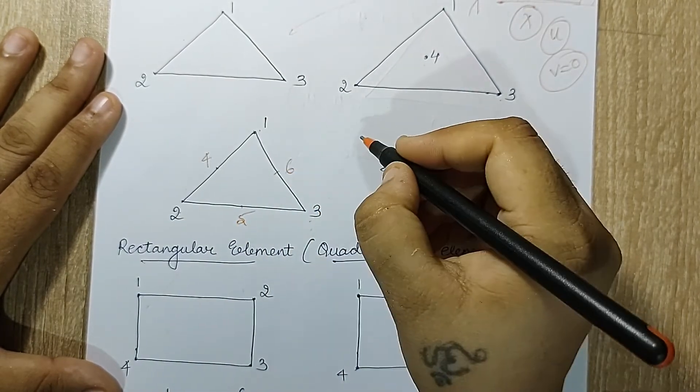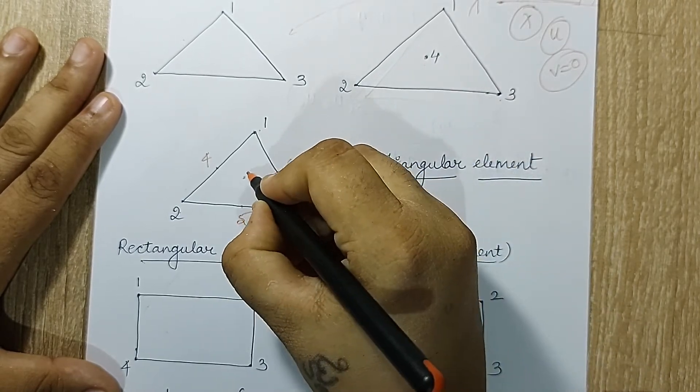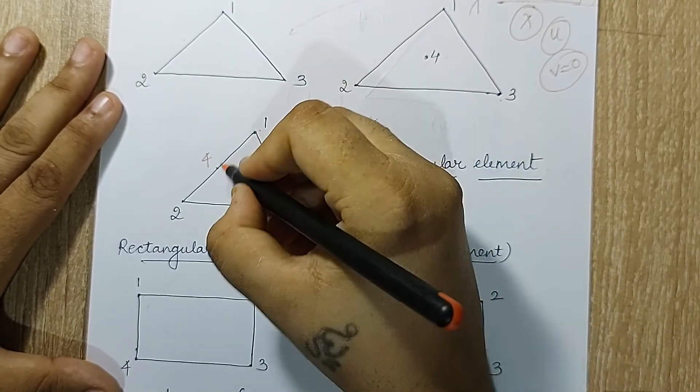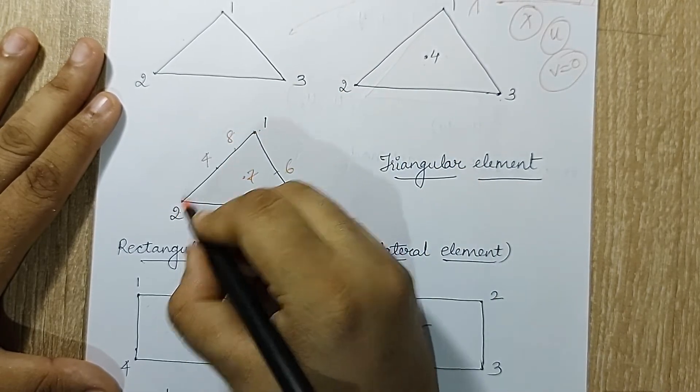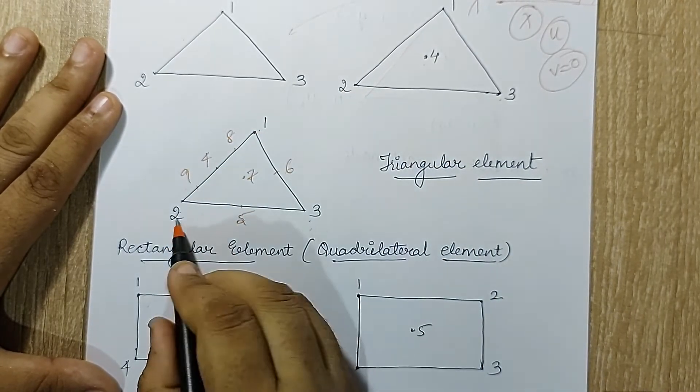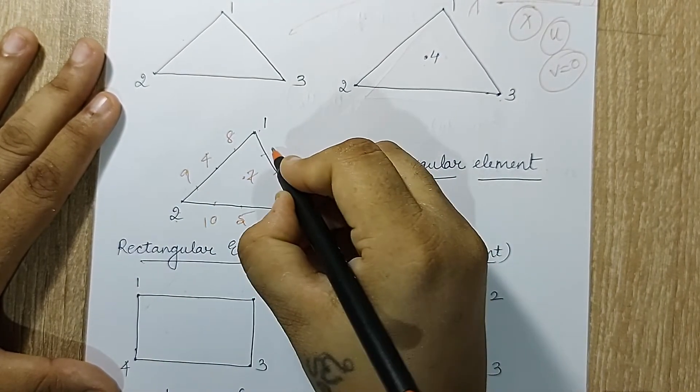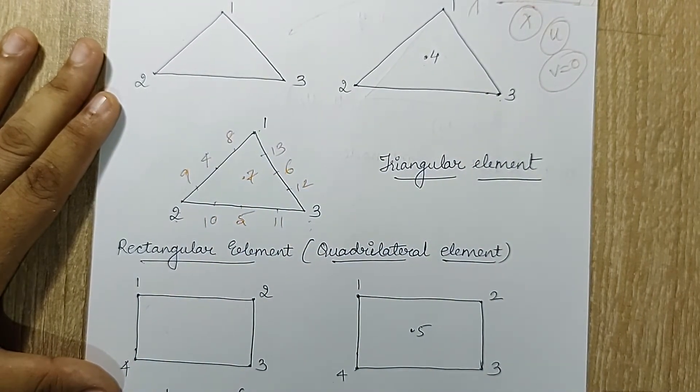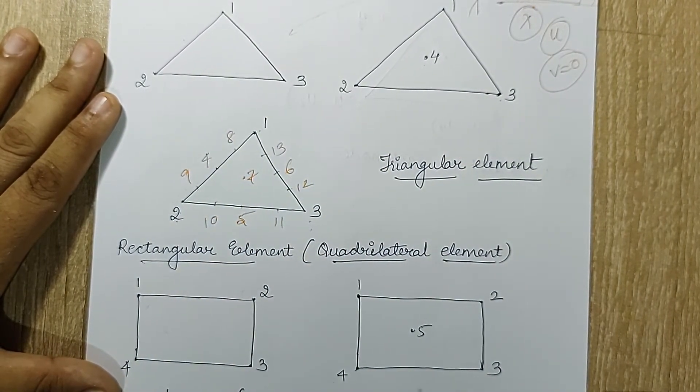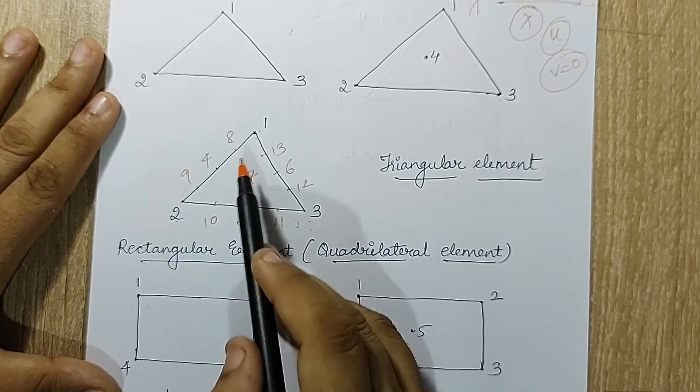If you want, you can keep on increasing these number of nodes. If I want a node at the center, seven. I want more nodes, so I can mark eight between one and four, mark nine between two and five. I can mark ten here, eleven, twelve, thirteen. This is not it—you can keep on increasing the number of nodes.